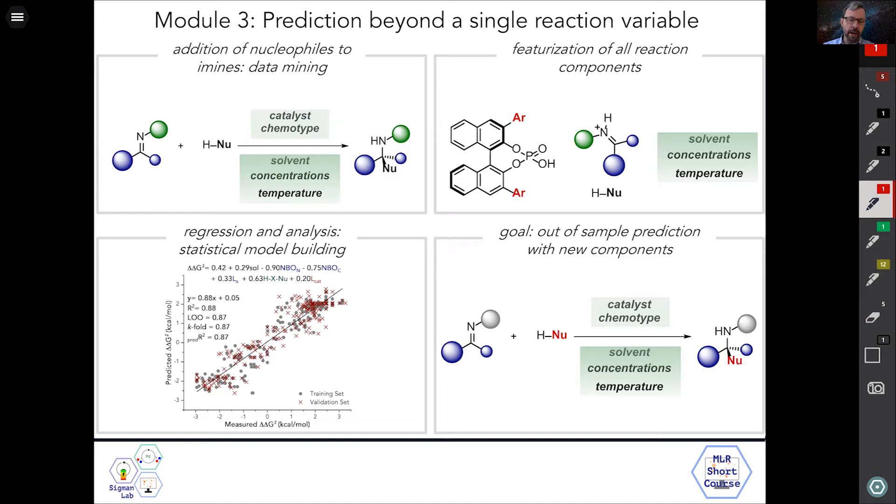The class we're talking about is the addition of nucleophiles to imines. In this class of reactions, there are a number of chiral catalysts that will promote this. We chose within this subclass of reactions the phosphoric acid catalyst, which is an acid catalyst which will protonate the imine to make an iminium, and ultimately that is what undergoes, in an ion pair form, the enantioselective nucleophilic addition.